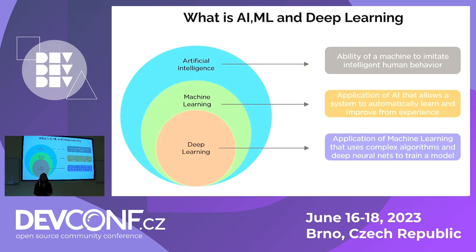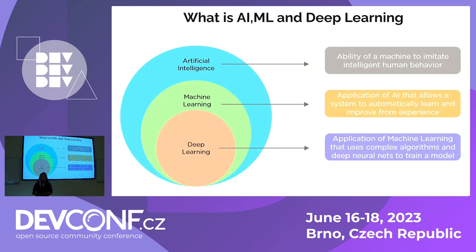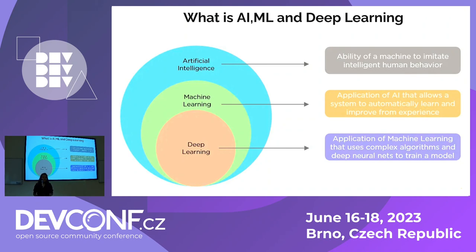AI is the development of computer systems that perform tasks which typically require human intelligence, such as recognition of speech, recognition of image, and understanding natural languages. It is a broader field that contains many subfields like machine learning and deep learning. Machine learning is all about training computer algorithms so that they can find out patterns from data. The main aim is to create a model that can identify patterns and make predictions and decisions based upon data it hasn't seen before.